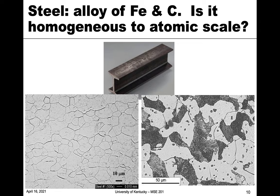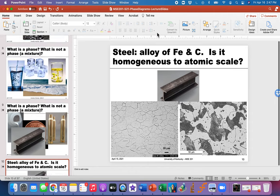However, most steel has carbon above the saturation point, so it forms new phases. You get this other unique phase, and so steel for the most part is a mixture of phases. We're going to talk about this in the next part of the chapter, and you'll see what we mean by these phase mixtures.